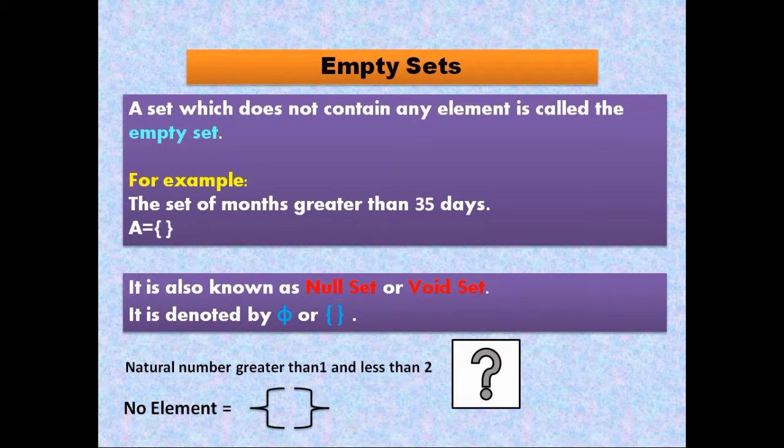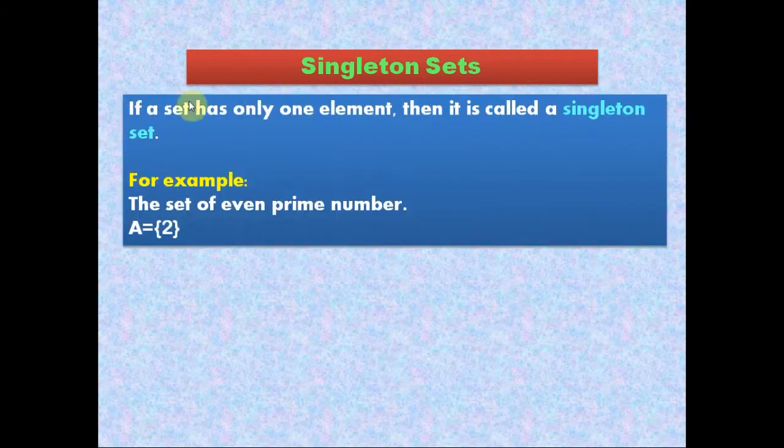Now let's move on to the next set. Here we will talk about singleton sets. Let's see the definition. If a set has only one element, then it is called a singleton set. It means that a set which has only one element is called a singleton set.